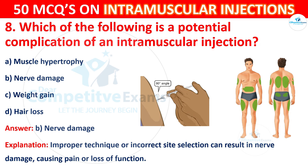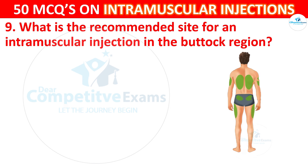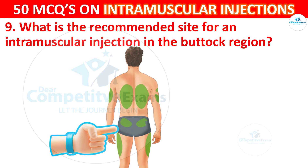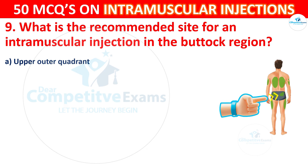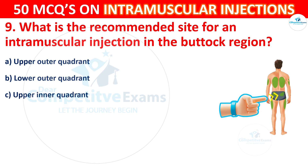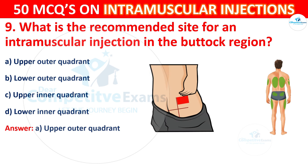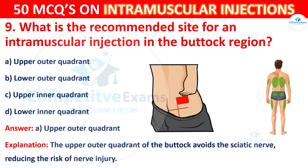Question 9: What is the recommended site for an intramuscular injection in the buttock region? Options are: upper outer quadrant, lower outer quadrant, upper inner quadrant, or lower inner quadrant. The correct answer is A, upper outer quadrant. The upper outer quadrant of the buttock avoids the sciatic nerve, reducing the risk of nerve injury.